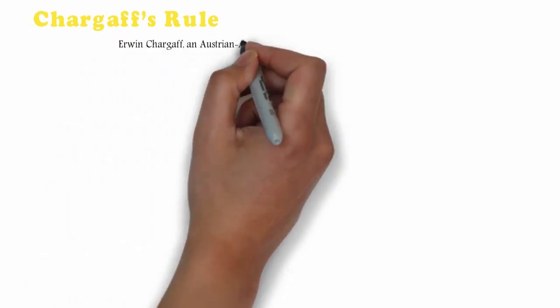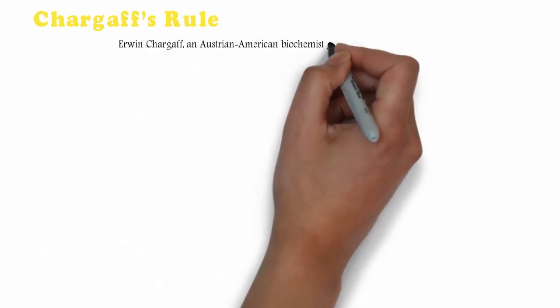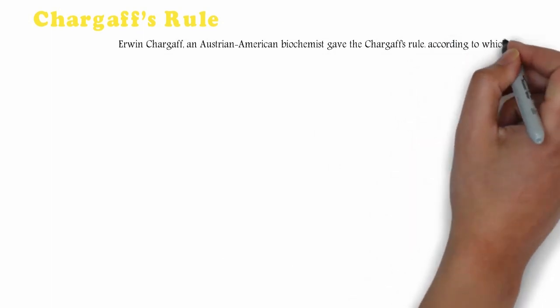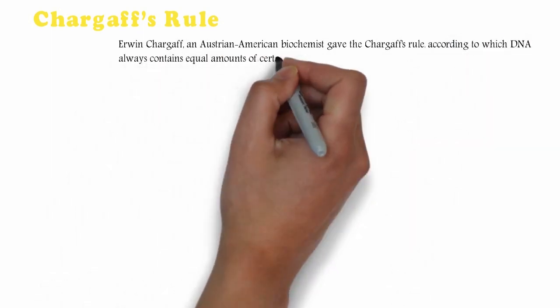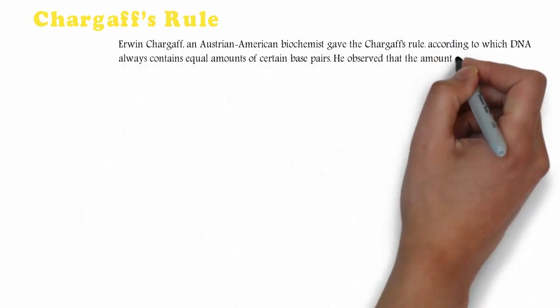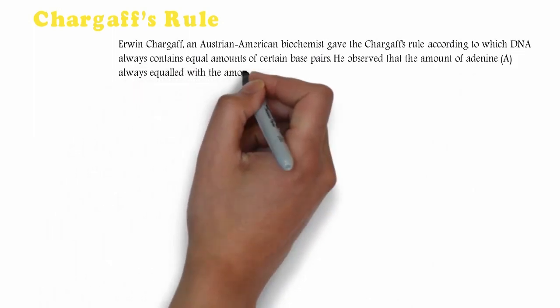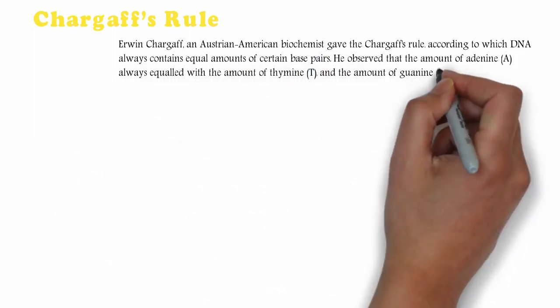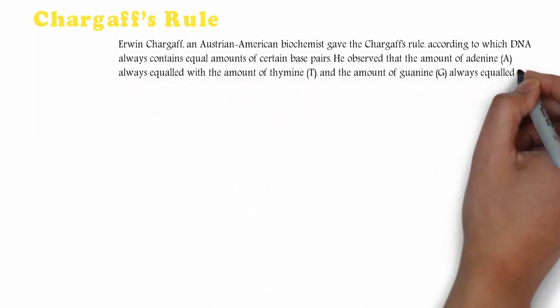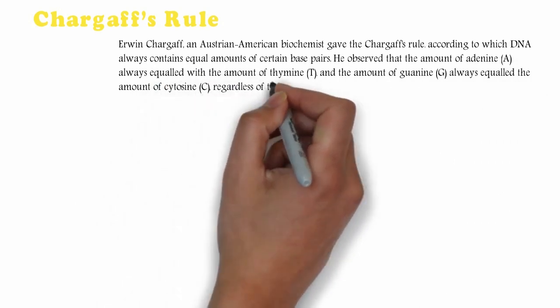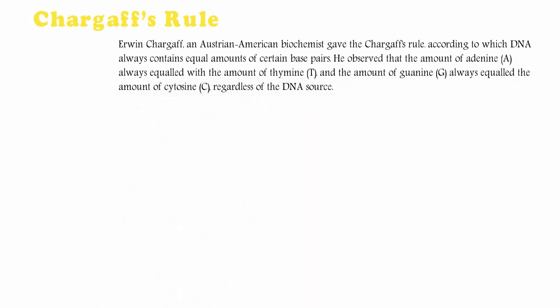Chargaff's Rule. Irwin Chargaff, an Austrian-American biochemist, gave Chargaff's rule, according to which DNA always contains equal amounts of certain base pairs. He observed that the amount of adenine always equaled the amount of thymine, and the amount of guanine always equaled the amount of cytosine, regardless of the DNA source.